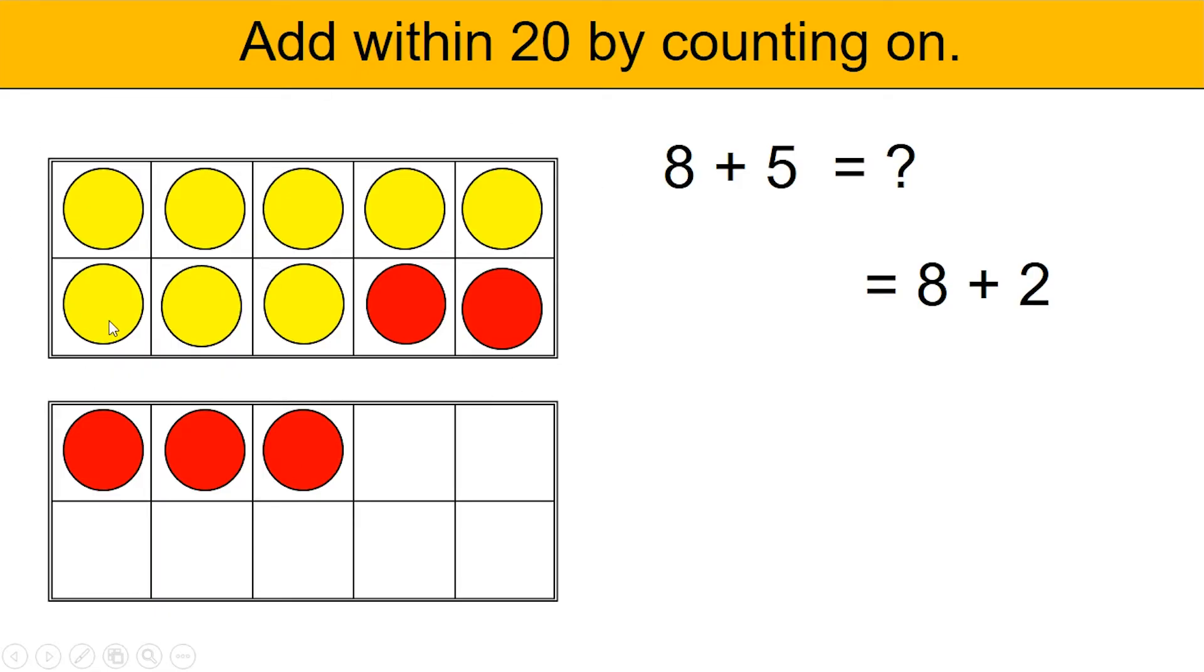The first tens frame is a 10. We added 3 more. 10 plus 3 is 13. So 8 plus 5 is equal to 13.